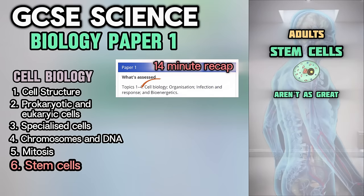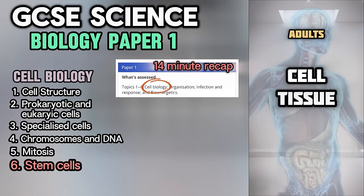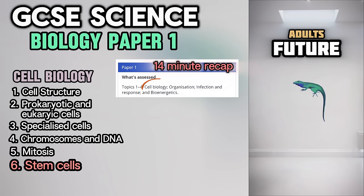Adult stem cells aren't as great — they can't become anything, but some can regenerate. Every cell, every tissue, every organ in the body has stem cells as a portion. In the future, we hope to use stem cells to grow back body parts for all those that need help.